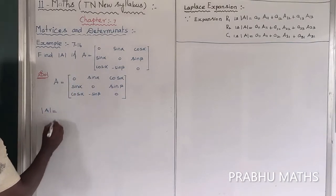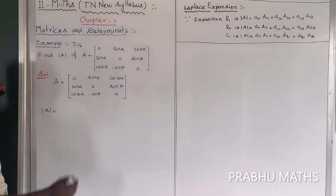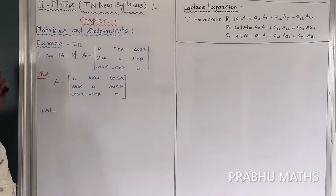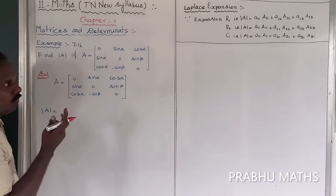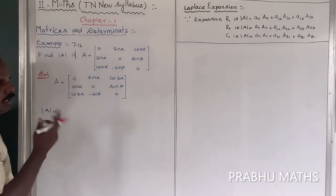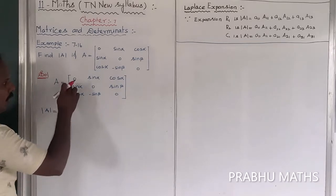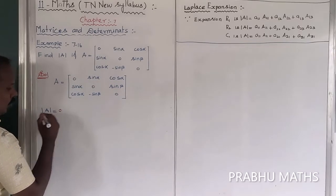To find the determinant of A, we use row 1 expansion. The determinant of A, followed by the row 1 expansion, gives us elements A11, A12, and A13 — that is: 1, sin α, and cos α respectively.